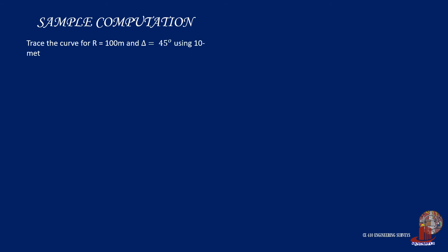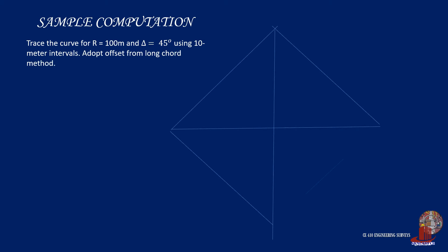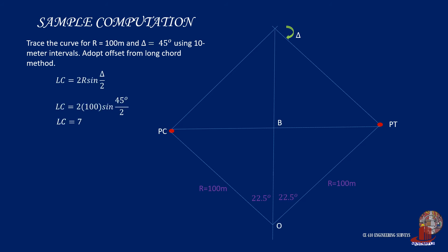Let's have this example. Trace the curve for radius R given as 100 meters and central angle delta as 45 degrees, using 10-meter intervals, adapting the offset from long cord method. The long cord is needed, so solve for LC with the formula 2R sine of half of delta. The long cord is taken as 76.54 meters.